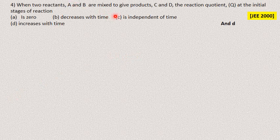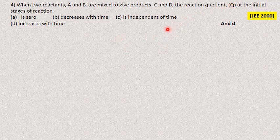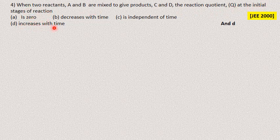Question: two reactants A and B are mixed to give products C and D. What is the reaction quotient at the initial stages? When the reaction has just begun, C and D are forming, so Q — the ratio of products to reactants — will be in an increasing status. As time increases, Q also increases until equilibrium is attained. Answer is D.